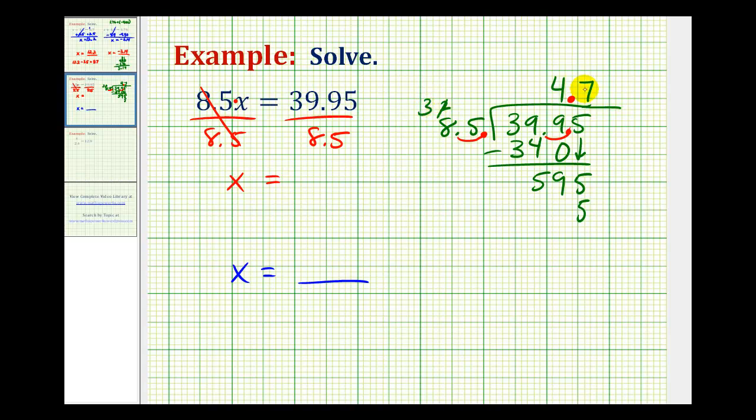7 times 5 is 35, carry a 3. 7 times 8 is 56, plus 3, that's 59. That's good news because this difference is 0, which means this decimal terminates, and our solution is x equals 4.7.